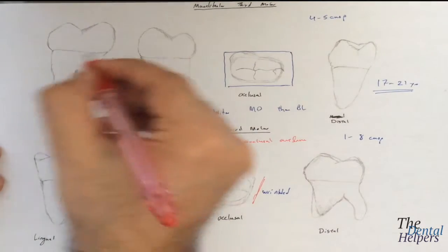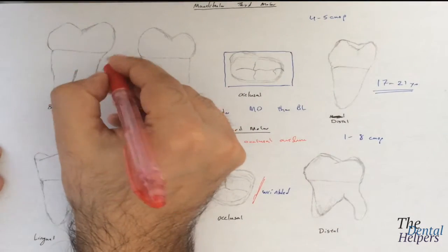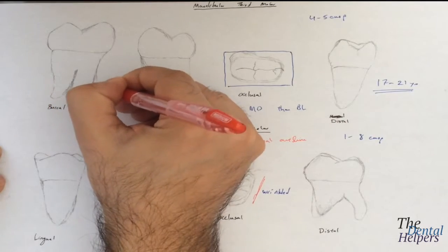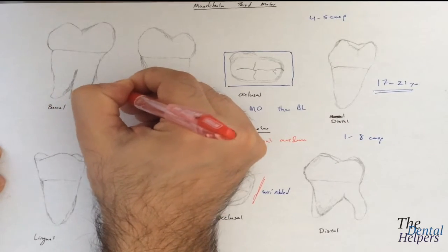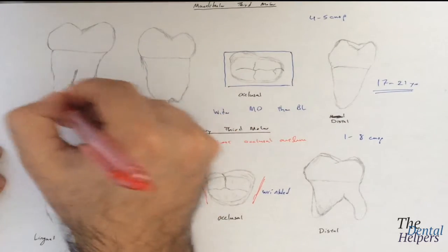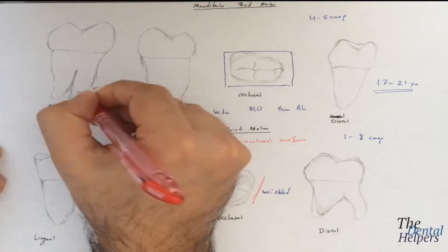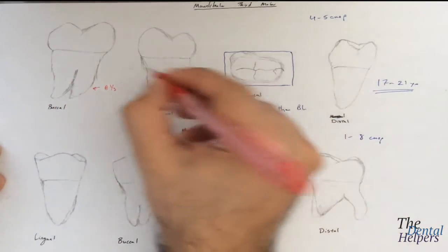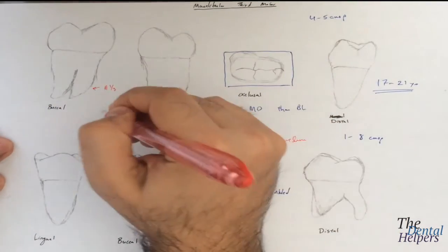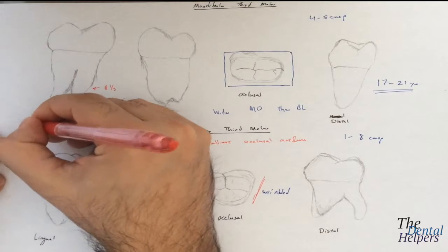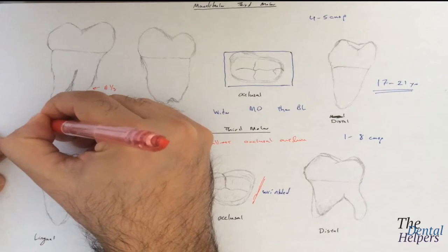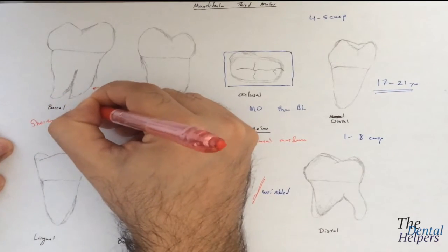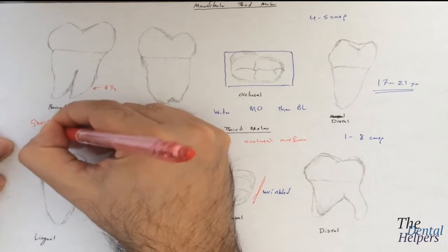In terms of the mandibular third molars, at the apical third you're going to see the roots curve distally. The mandibular third molar is the shortest of all the mandibular teeth.